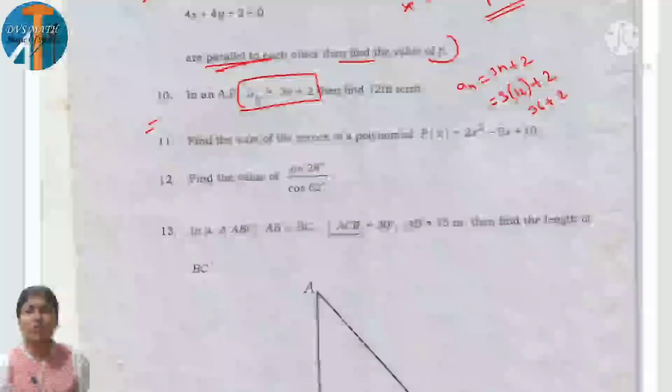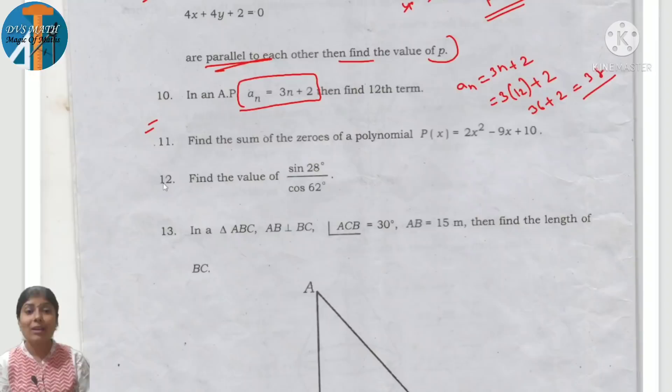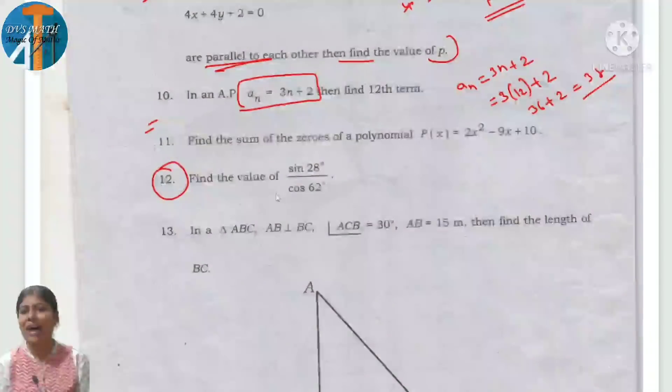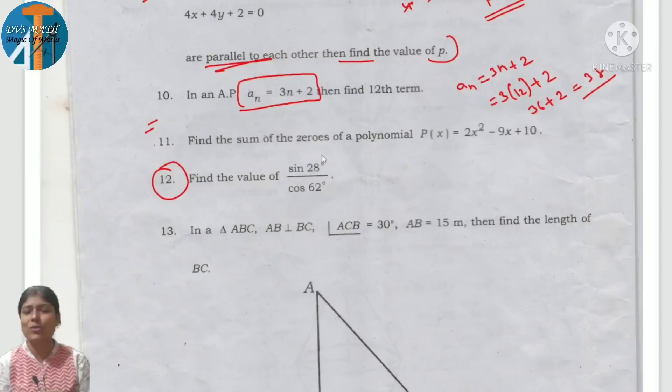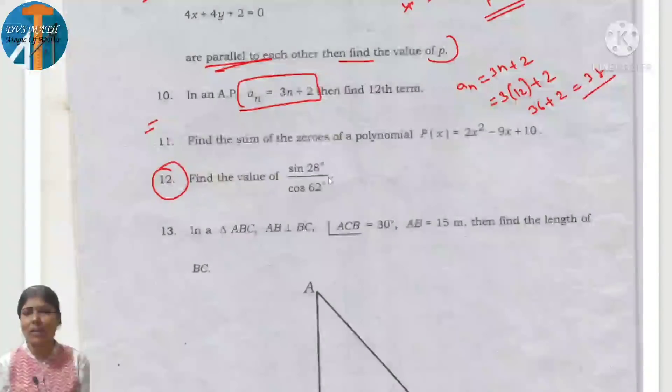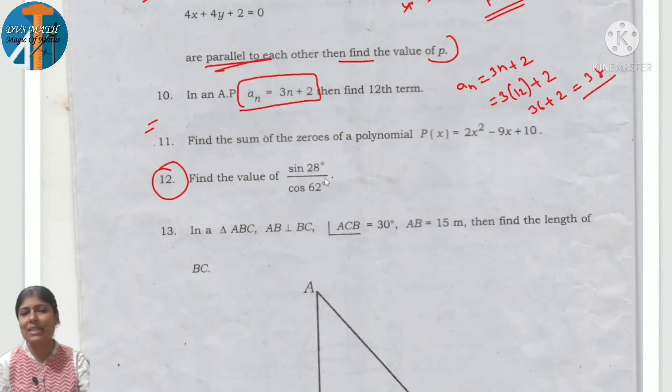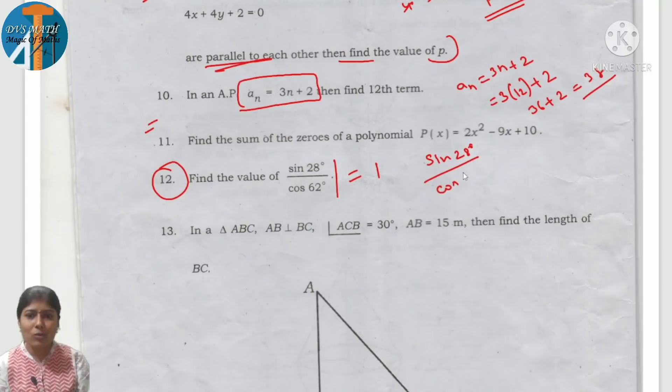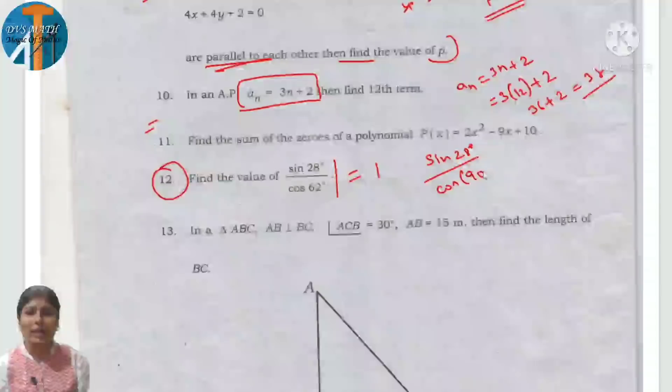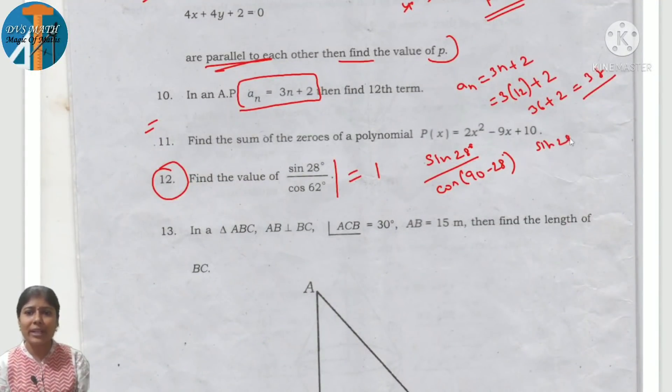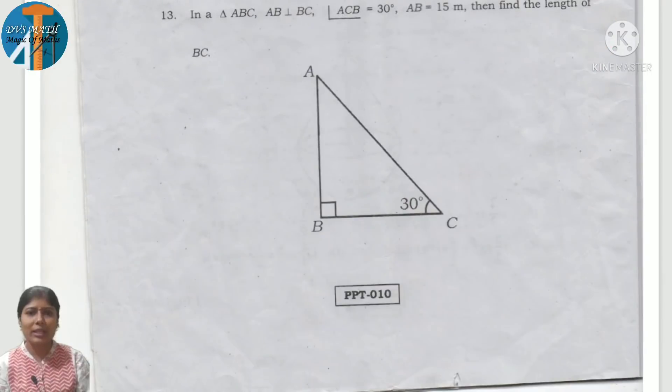12th question: the value of sine 28 cos 62. These are complementary angles. 62 is 90 minus 28. Sine 28 cos 62 becomes sine 28 times sine 28 because cos 90 minus theta equals sine theta. So sine theta by sine theta, it is 1.